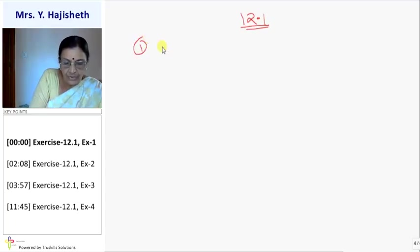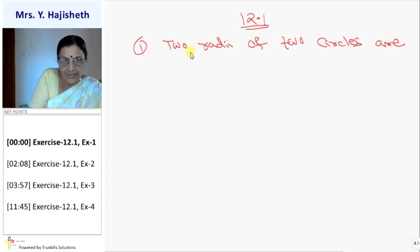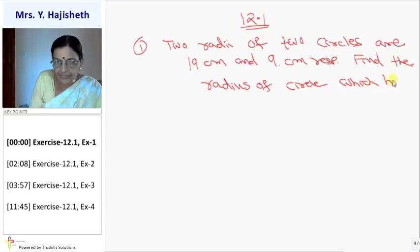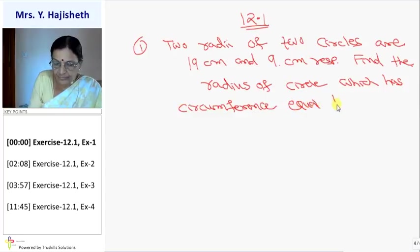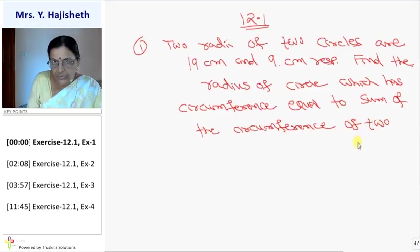First sum: Two radii of two circles are 19 centimeter and 9 centimeter respectively. Find the radius of circle which has circumference equal to sum of the circumference of two circles.